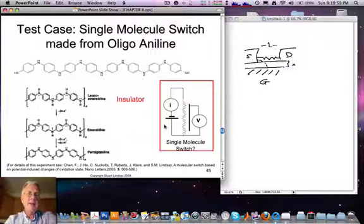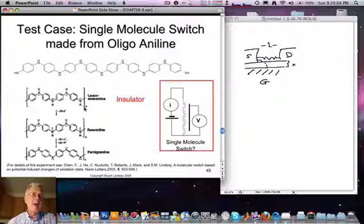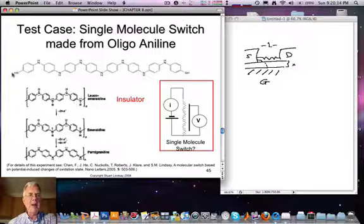So let's turn to chemical control of the oxidation state of a molecule. The molecule at the top is an oligomer, i.e. a small polymer, finite length of aniline. And so you can see it consists of one, two, three, four, five, six, seven, eight aniline repeat units with a thiol at each end, so it can be attached to a metal electrode.